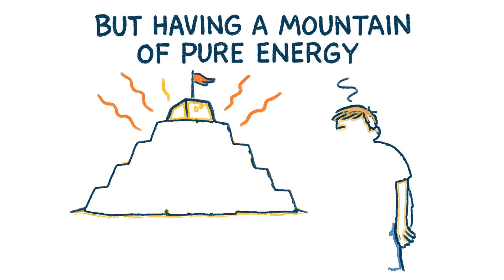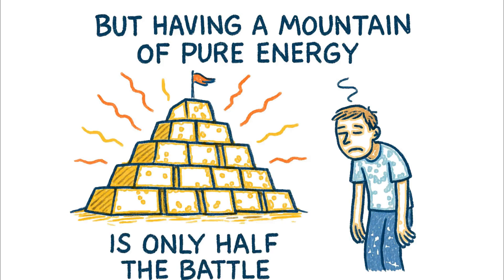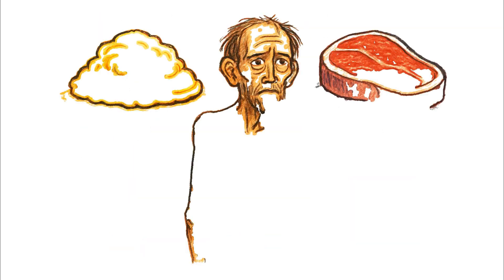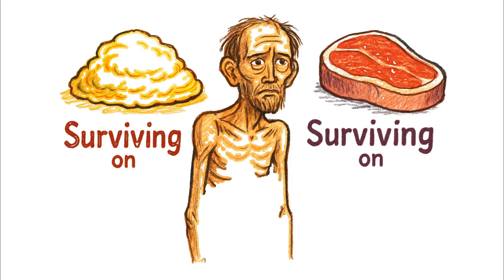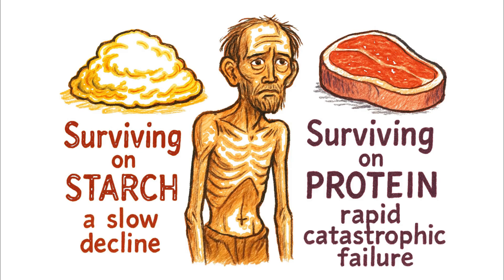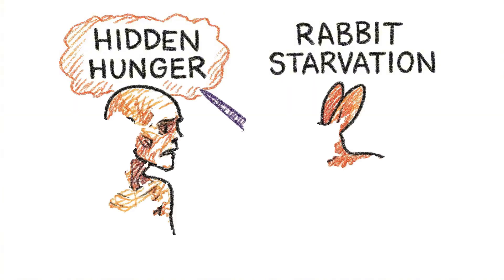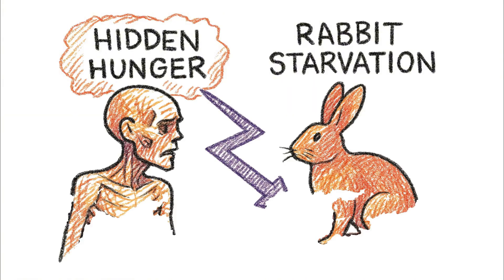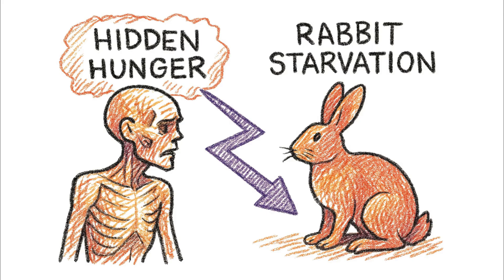But having a mountain of pure energy is only half the battle. Surviving on starch alone is a slow decline. And worse, surviving on pure protein is a rapid, catastrophic failure. This introduces a terrifying paradox known as hidden hunger or, more starkly, rabbit starvation.